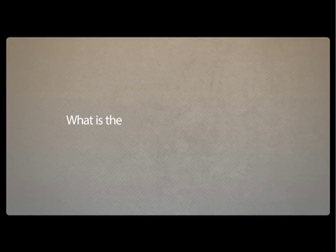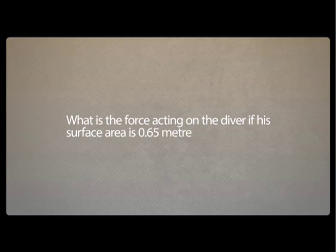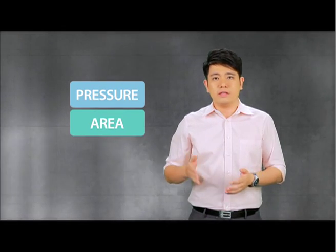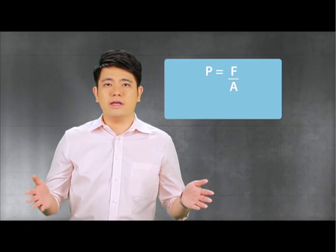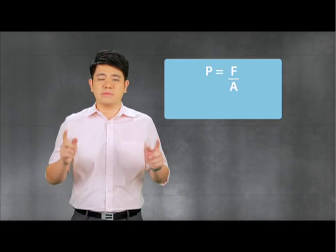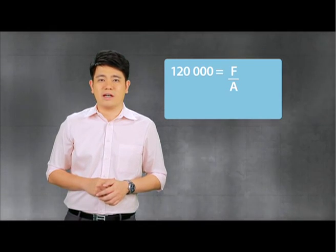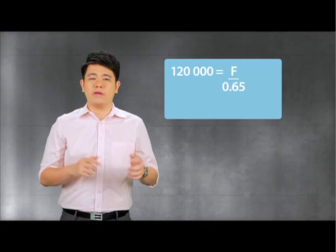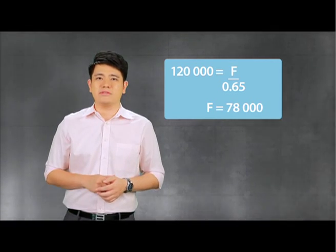So just be careful. Sometimes a follow-up question will be given: what is the force acting on the diver if his surface area is 0.65 meters squared? Since you have pressure and area, you need to find force. Use the formula pressure equals force over area. Substitute P with 120,000 and A with 0.65 — that gives you force at 78,000 Newtons.